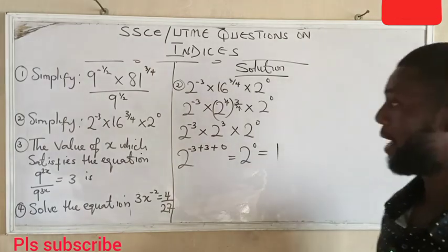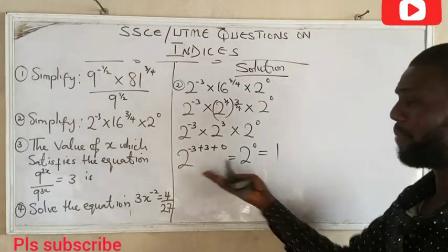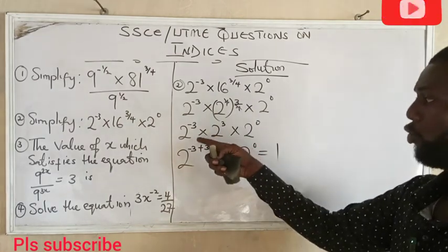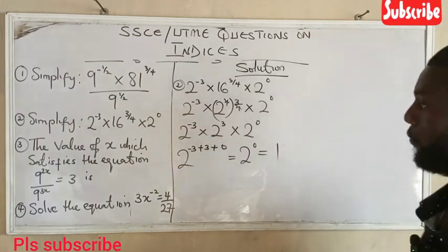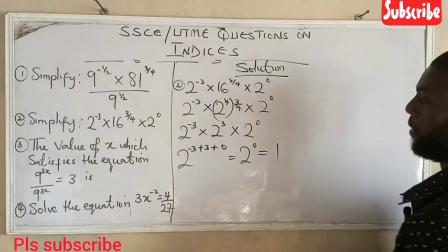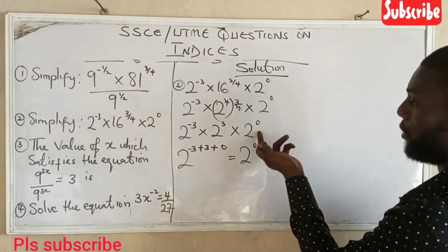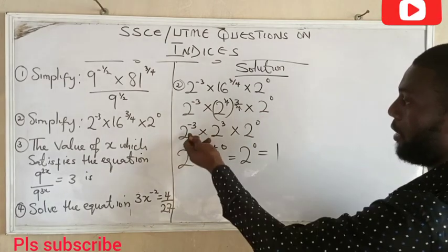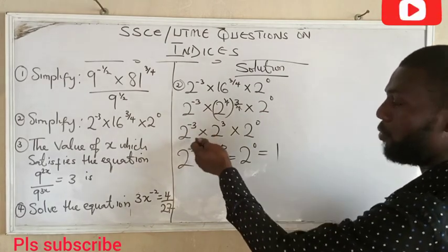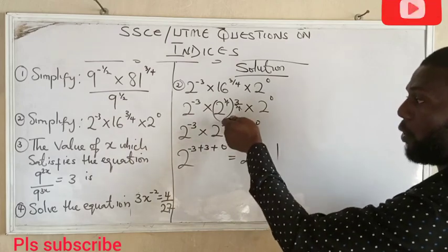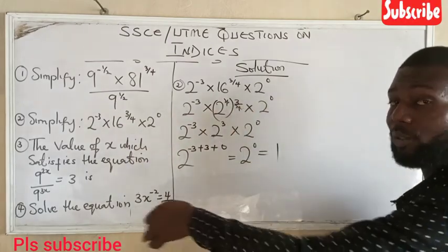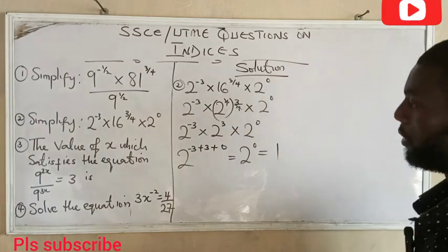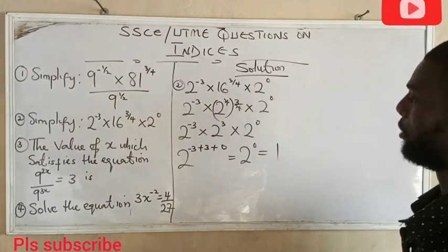If you don't want to use this process, there are other ways. For example, 2 raised to power 0 is 1, so that term becomes times 1. And 2 raised to power minus 3 can be written as 1 over 2 raised to power 3, which cancels with 2 raised to power 3. But that is another approach. Either way, the answer is 1.